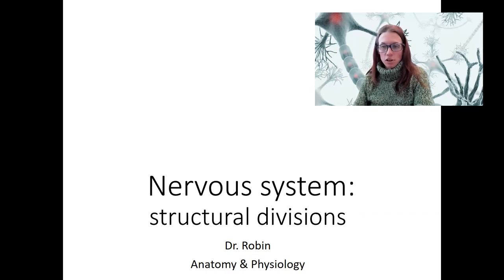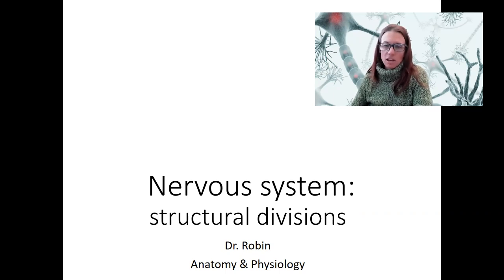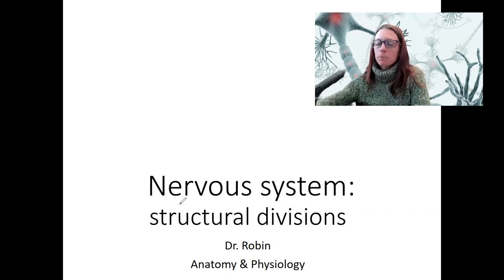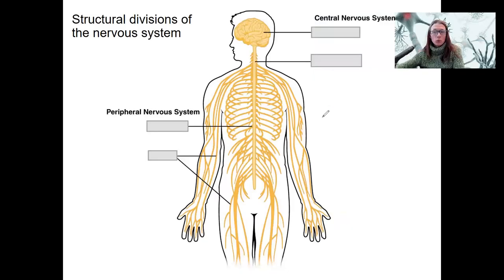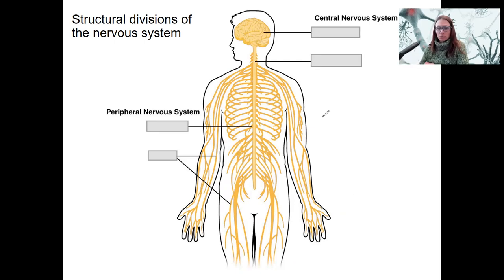We're going to talk about the divisions of the nervous system — different ways to classify or categorize it, starting with structural divisions. The other type will be functional divisions in the next video. So first structural, and this is going to introduce some anatomy. The anatomy is going to be a whole chapter later on, so this is an introduction to the anatomy first.